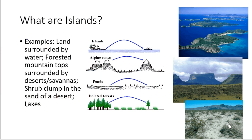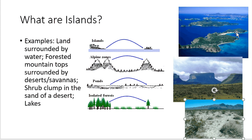Larger organisms — vertebrates, birds, lizards — will largely be able to cross between these different clumps. But smaller organisms like some insects may not be able to cross and will be isolated on these islands. So islands are not just pieces of land surrounded by water, but more broadly pieces of habitat surrounded by a very different type of habitat.